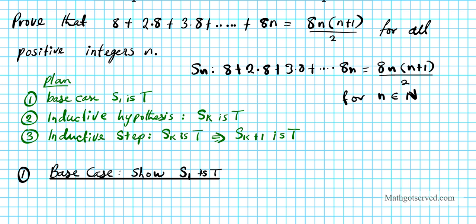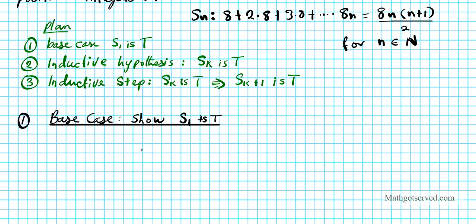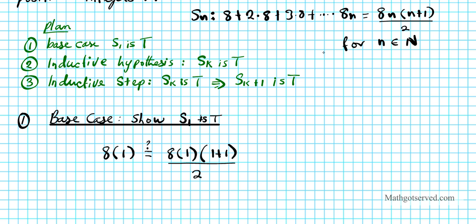S sub 1 is simply what you get when you plug in 1 into this equation. So if I plug in 1 — the initial case — I get 8 times 1. The question is: is 8 times 1 equal to 8 times 1 times 1 plus 1 over 2? I took the left side and plugged in 1 for n to get 8 times 1. On the right side, I plugged in 1 for both n's. We start with 1 because the first positive integer is 1.